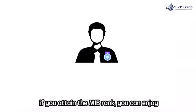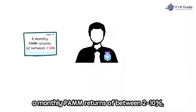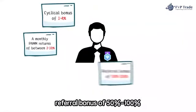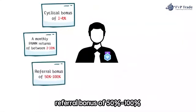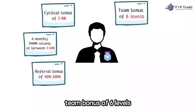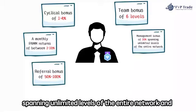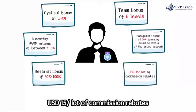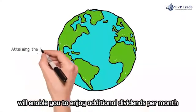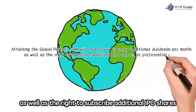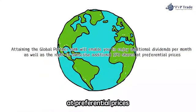For example, if you attain the MIB rank, you can enjoy a monthly PAM return of between 2 to 10%, Cyclical bonus of 1 to 4%, Referral bonus of 50 to 100%, Team bonuses of 6 levels, Management bonus of 20% spanning unlimited levels of the entire network, and USD 15 per lot of Commission rebates. Attaining the Global Partner rank will enable you to enjoy additional dividends per month as well as the right to subscribe to additional IPO shares at preferential prices.